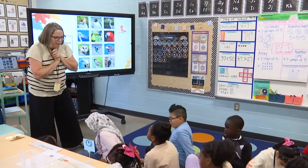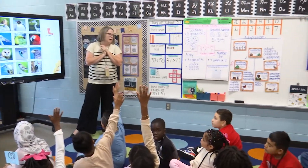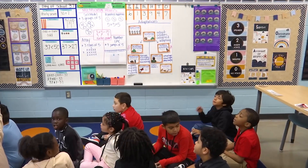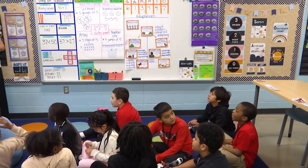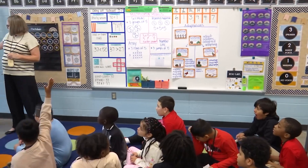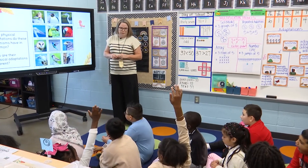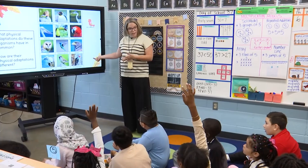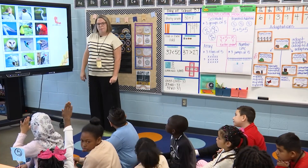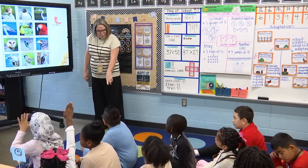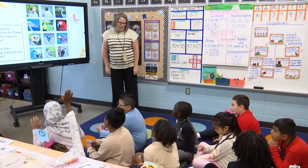All right, if you could turn your body back around — who can share what you noticed about these organisms? What do they all have in common? They all have beaks. Yeah, they all have beaks. What else did you notice? They have different eyes — so they all have eyes, but they might not look exactly the same. They all have feathers, although some of their feathers almost look a little furry, don't they? They're a little more fuzzy, so it kind of looks like fur, but they all have feathers.